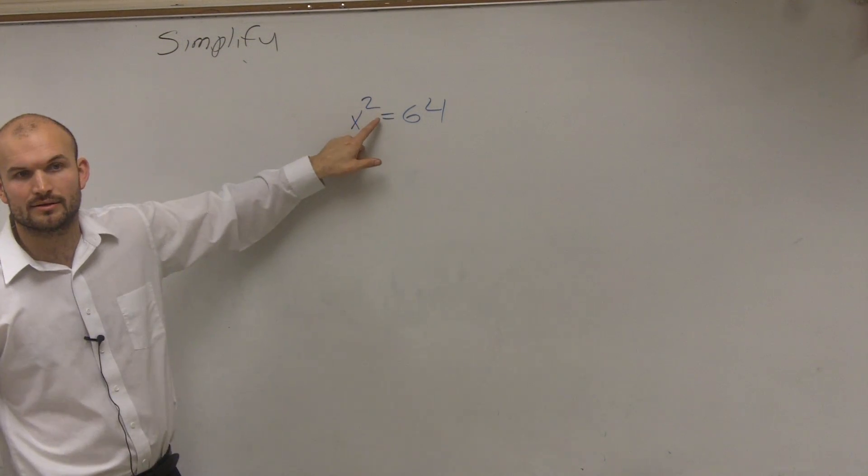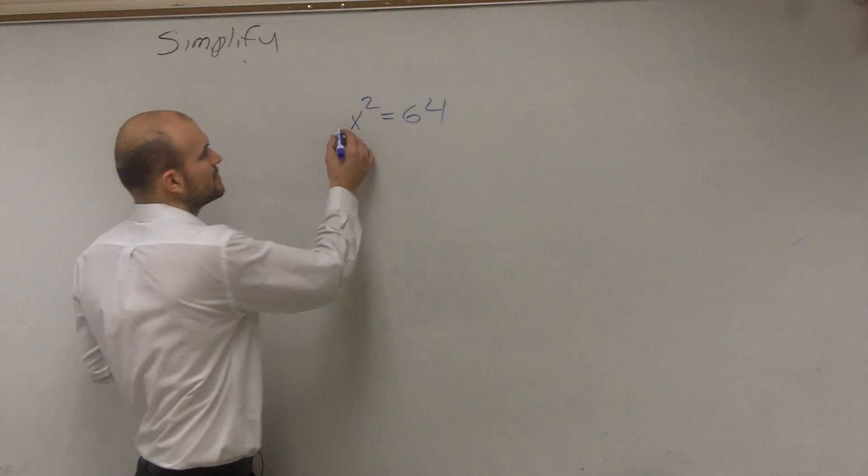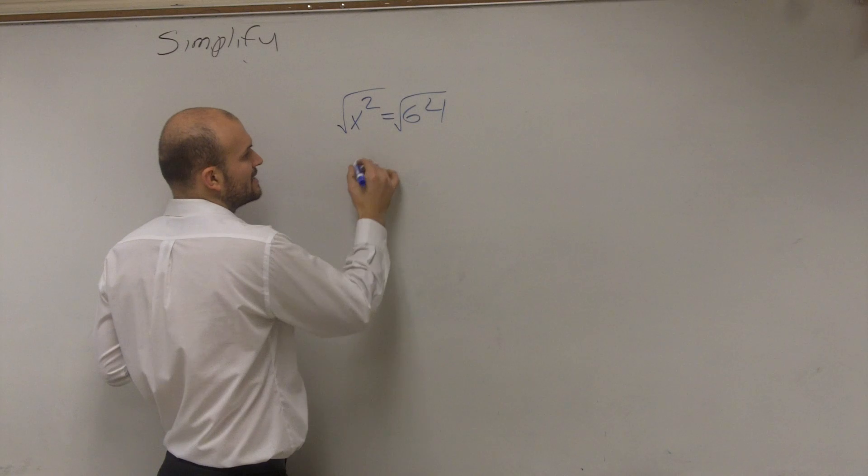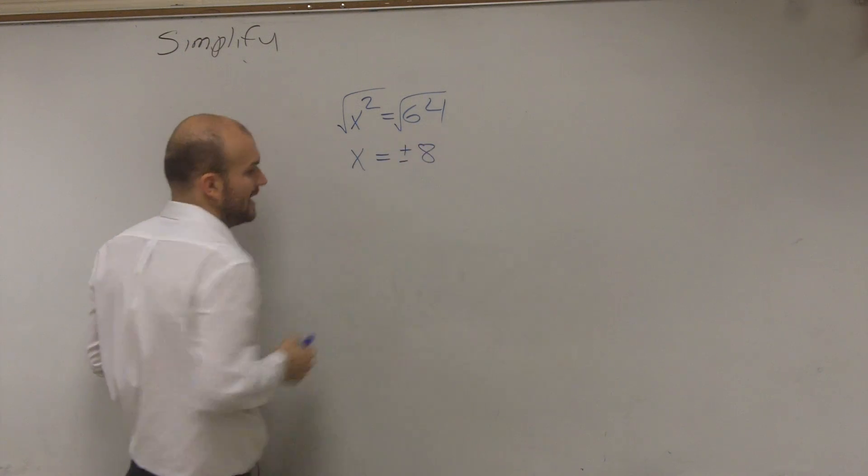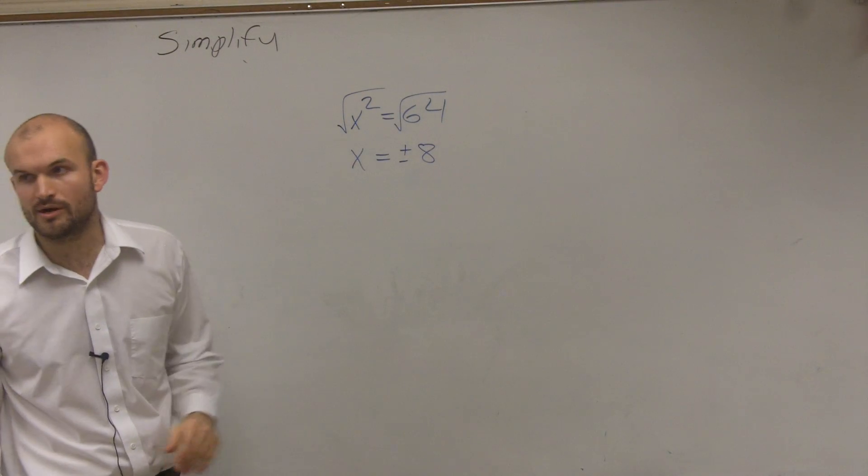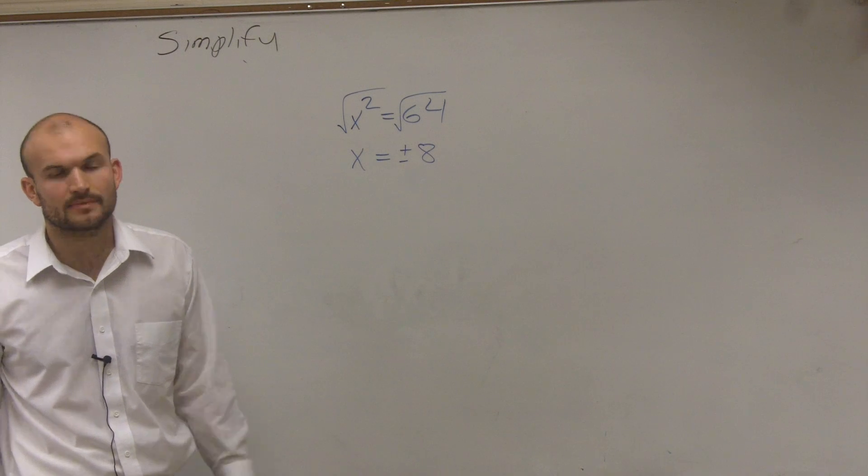So how would I undo squaring? Add a root, square root. So you can square root both sides. Therefore, x equals plus or minus 8. Remember, when you introduce the square root, you have plus or minus 8.